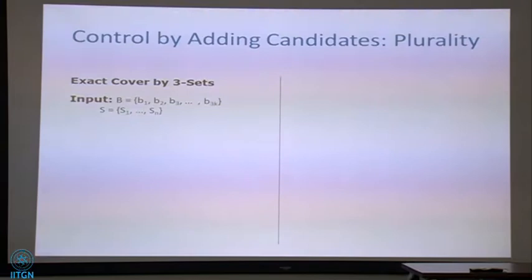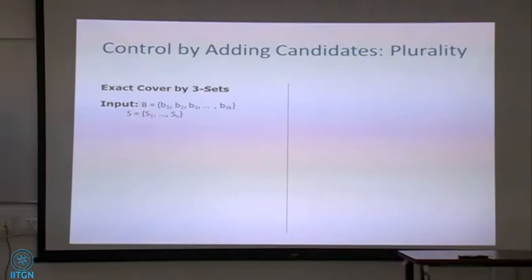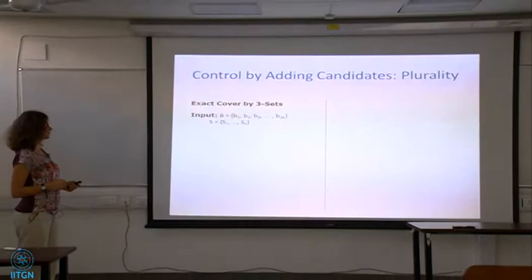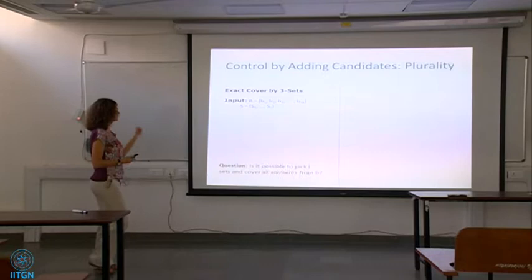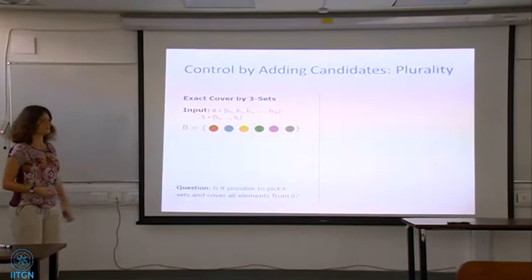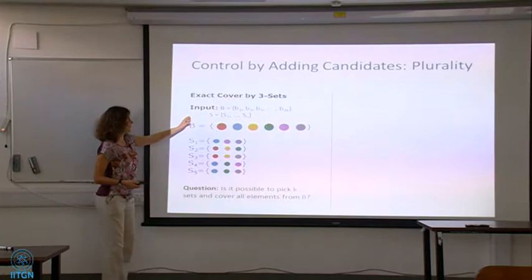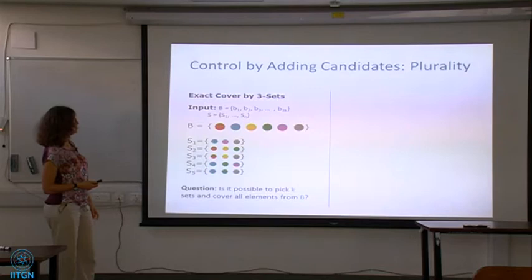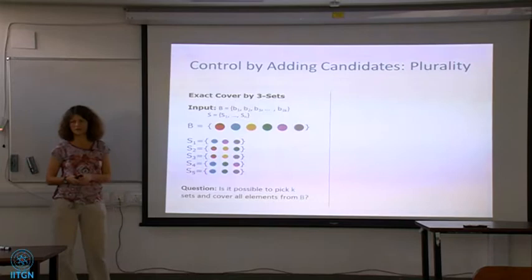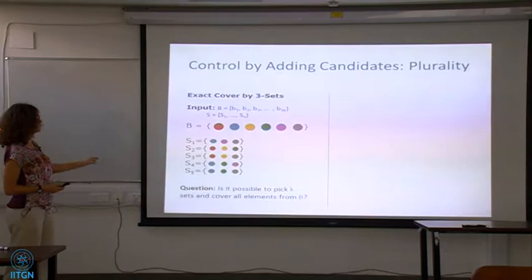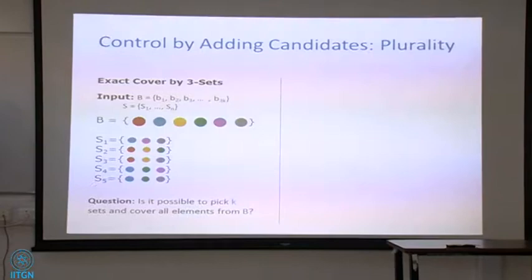To remind you: in exact cover by three sets, we have a ground set B of size 3K, and we have N subsets that are all of size three. The question is whether it's possible to pick K sets from this collection and cover all of B. So visually: this is my set B with colored dots, these are my subsets as various triples, and I want to cover all of B. In this particular case I can do it by taking S3 and S4, which exactly covers all of B. And note that a cover here would be an exact cover — if you pick K sets of size 3 and your goal is to cover 3K elements, you will cover them without overlaps.